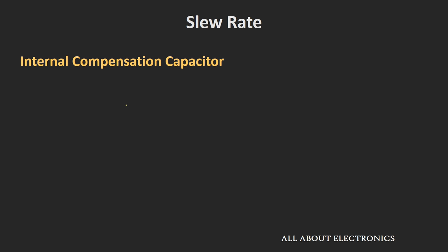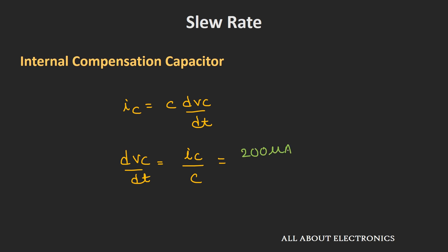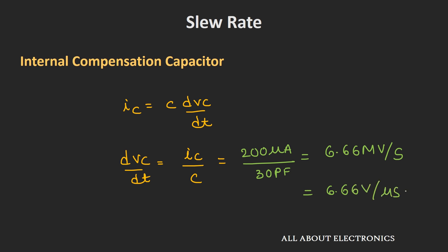We know that the capacitor current Ic can be given by the expression C times dVc/dt. So the rate of change of voltage equals the charging current Ic divided by the capacitance. For example, if the charging current is 200 µA and the compensation capacitor is 30 pF, the slew rate will be equal to 6.66 MV/s, or 6.66 V/µs. In this way, the slew rate depends upon the charging and discharging of the internal compensation capacitor.